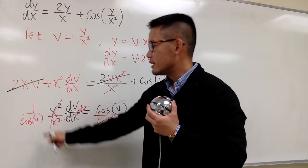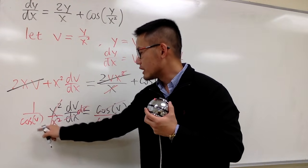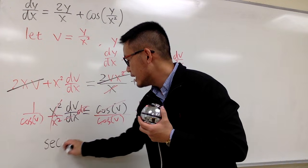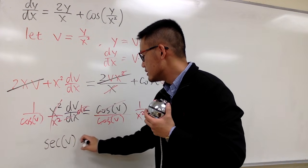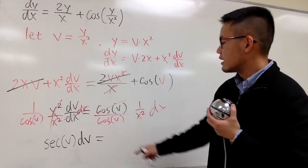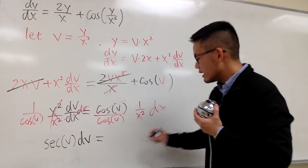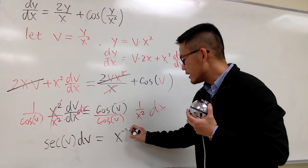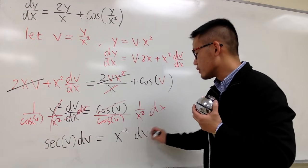But the reason I'll show you guys all the work is because now you see this is 1 over cosine of v, which is just secant of v, and then this is dv, and this is equal to, this is gone, this is 1 over x squared dx, right? So I'll write this as x to the negative 2 for integration purpose. So this is what we have.